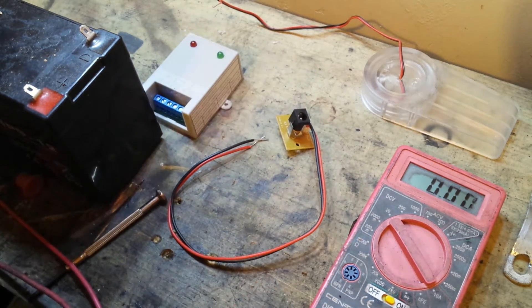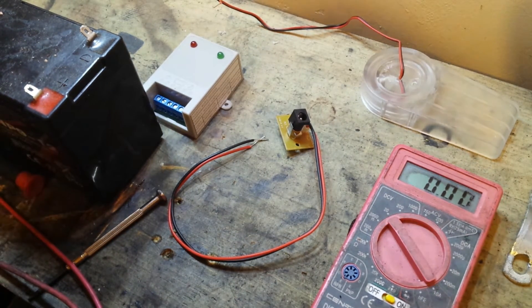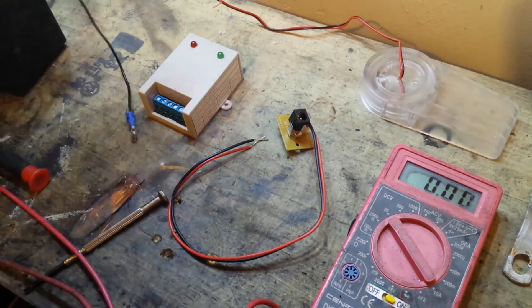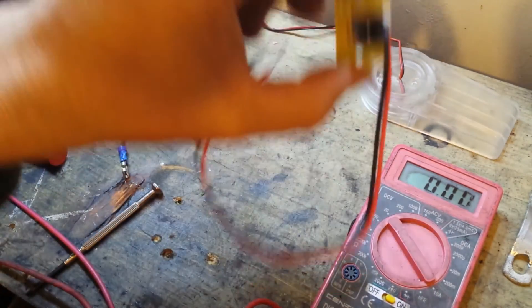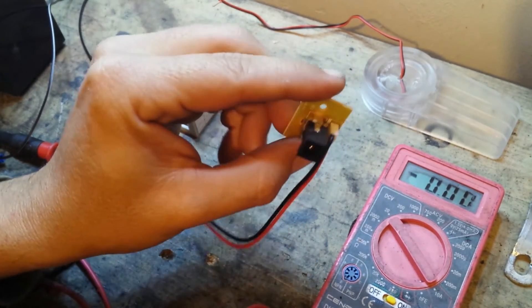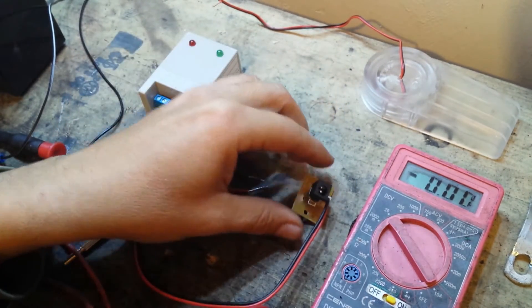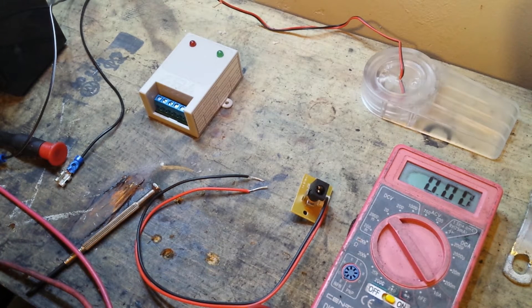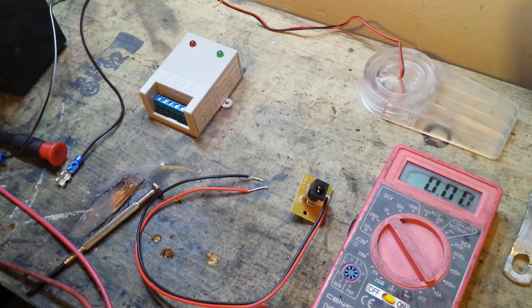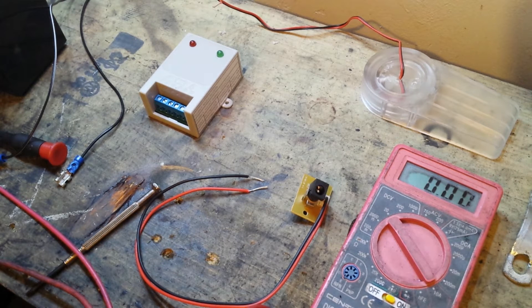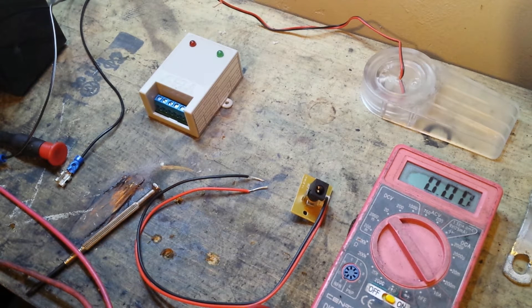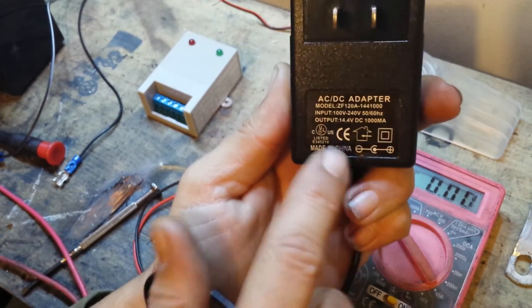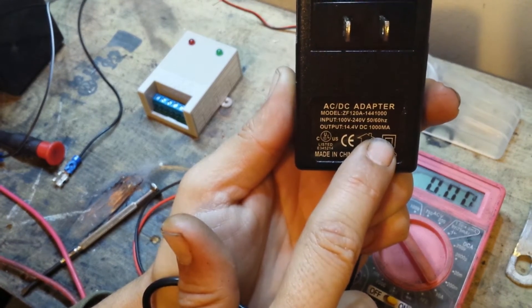I'm going to wire this where the solar panel goes, and we're going to use a wall wart style power supply and try to give it some power and see what it does. I have a power adapter that is 14.4 volts, 1000 milliamps, so that's 1 amp. We're going to wire this end and see if that works.